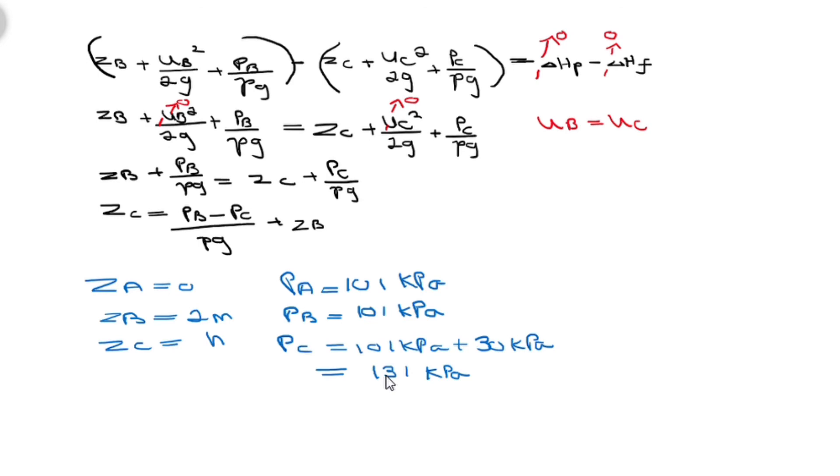Lastly the speed at A, it's the reference point so this is where everything starts at zero meters per second. Speed at B can be assumed to be the same as the speed at C.